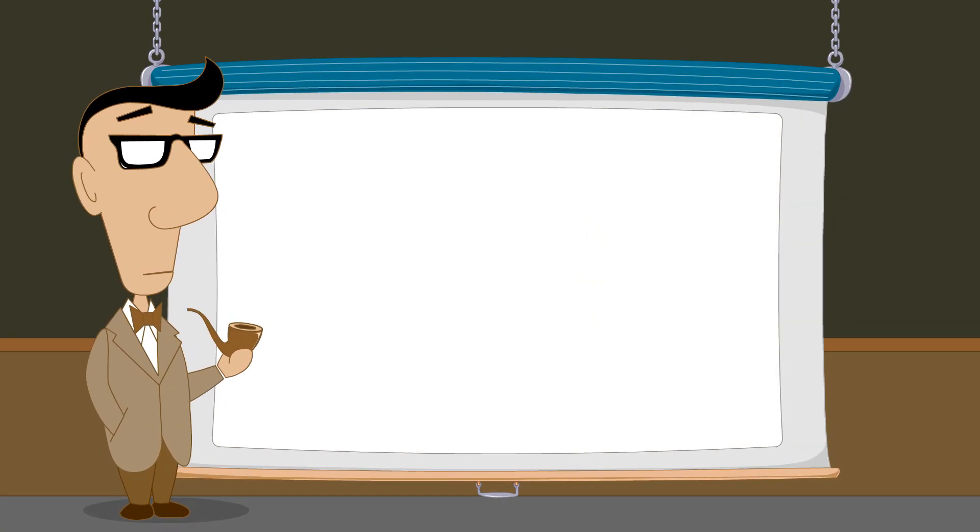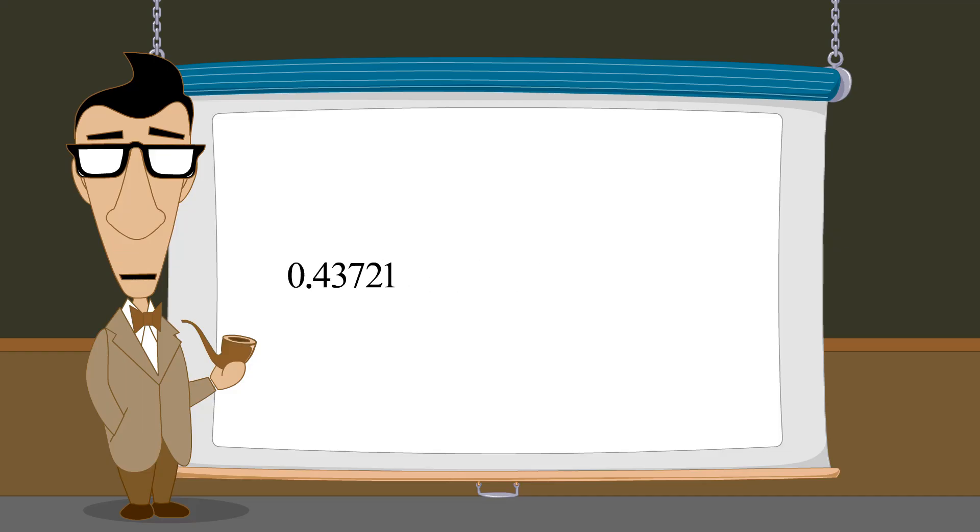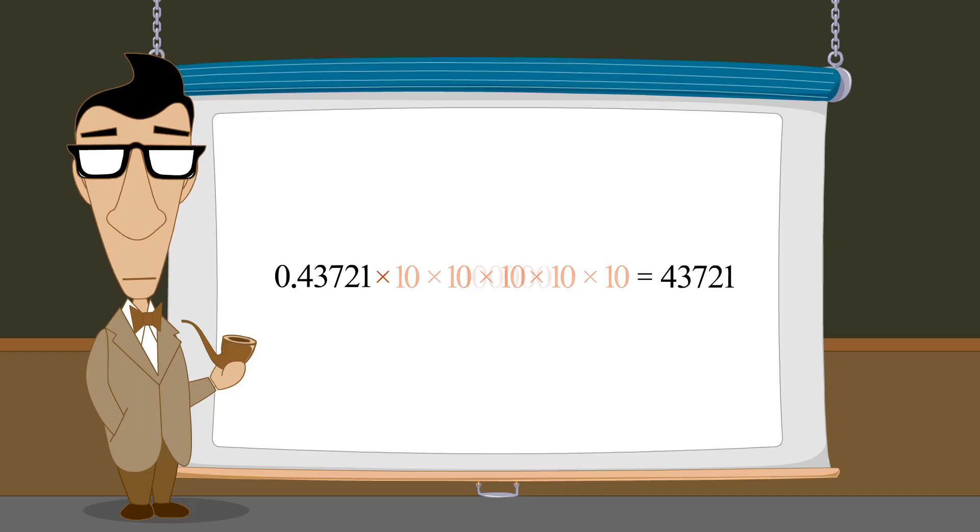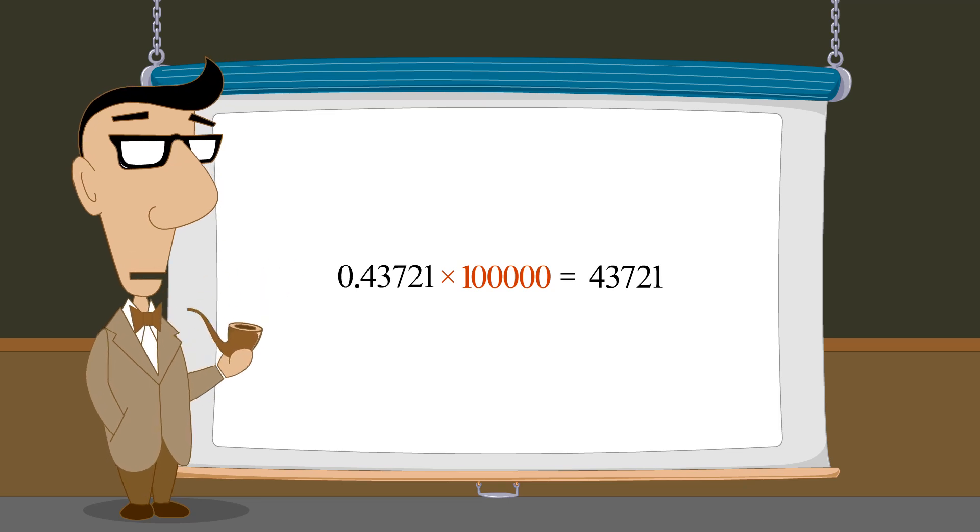We can use this same technique to convert any decimal number with a finite number of digits to a fraction by multiplying it by ten enough times to produce an integer and then dividing the integer by the same amount we multiplied by.